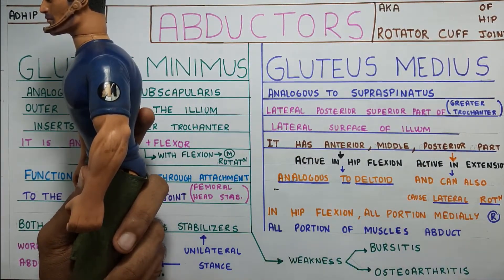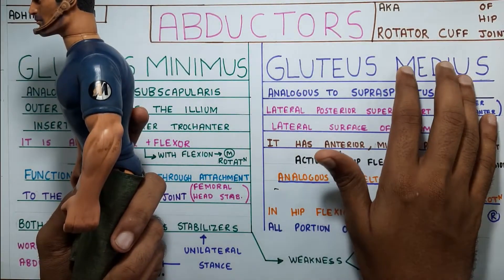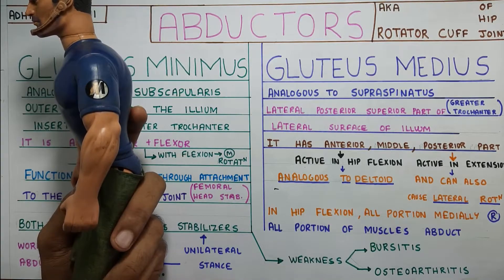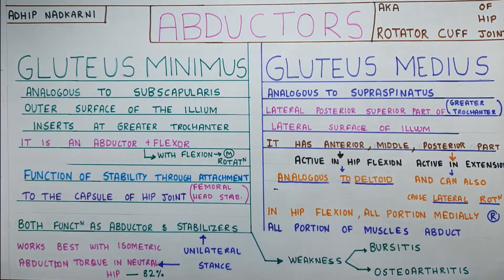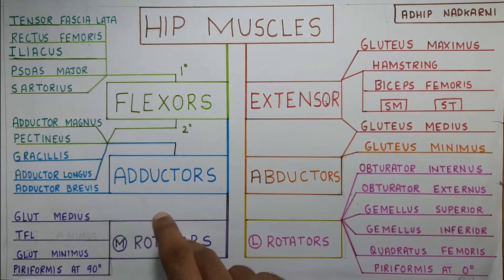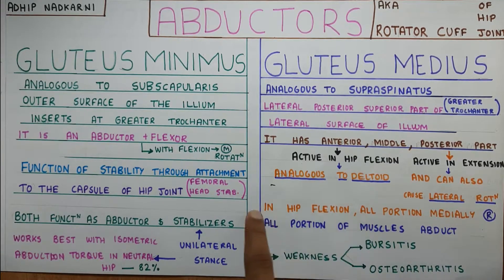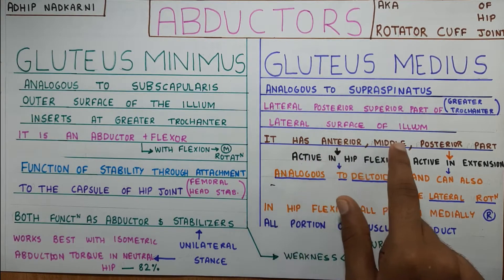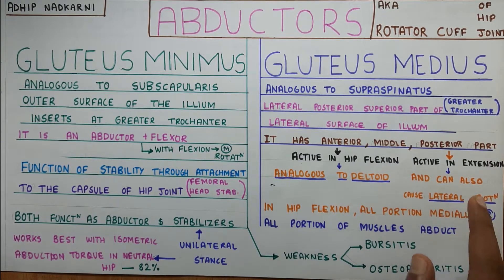The posterior part of gluteus medius can also cause lateral rotation in a neutral hip. In hip flexion, all three portions will cause medial rotation — which is why gluteus medius was listed under medial rotators in our classification (GTG: gluteus medius, TFL, and gluteus minimus). So gluteus medius helps in medial rotation when the hip is in flexion — all portions — while only the posterior part helps in lateral rotation in a neutral hip.